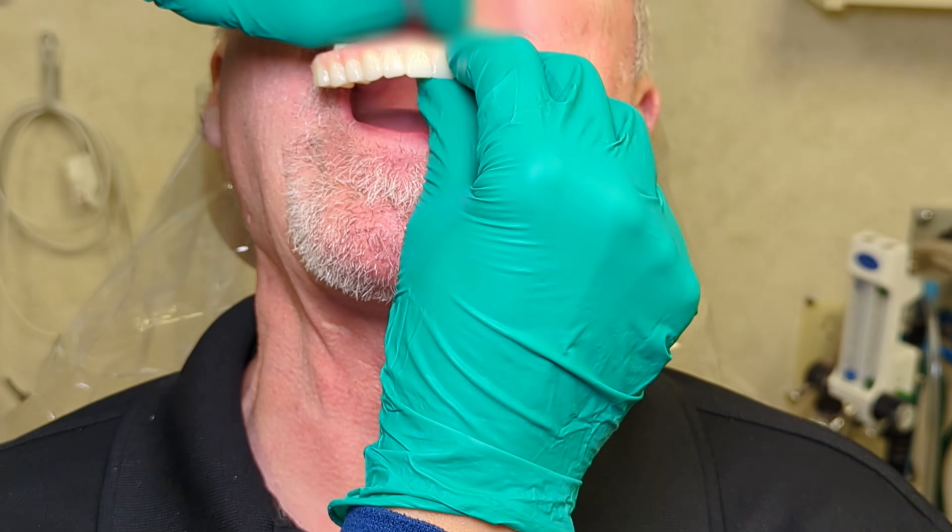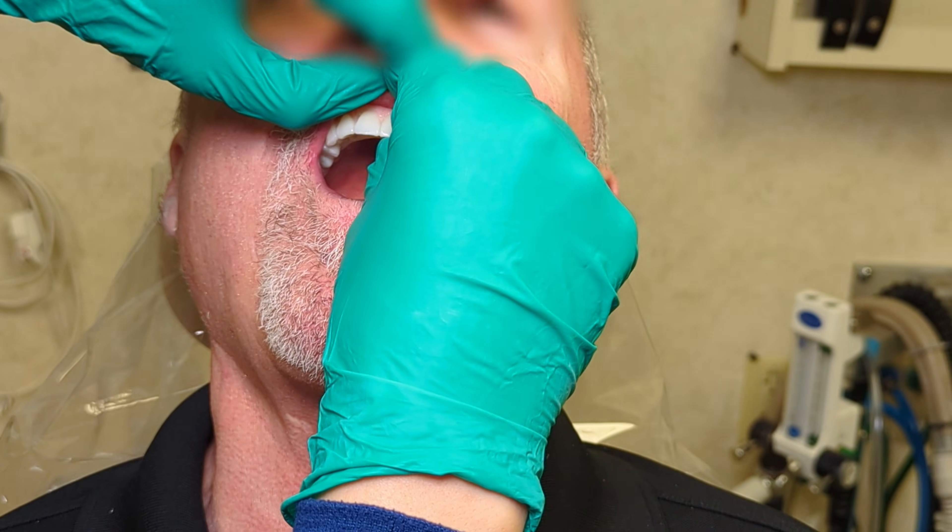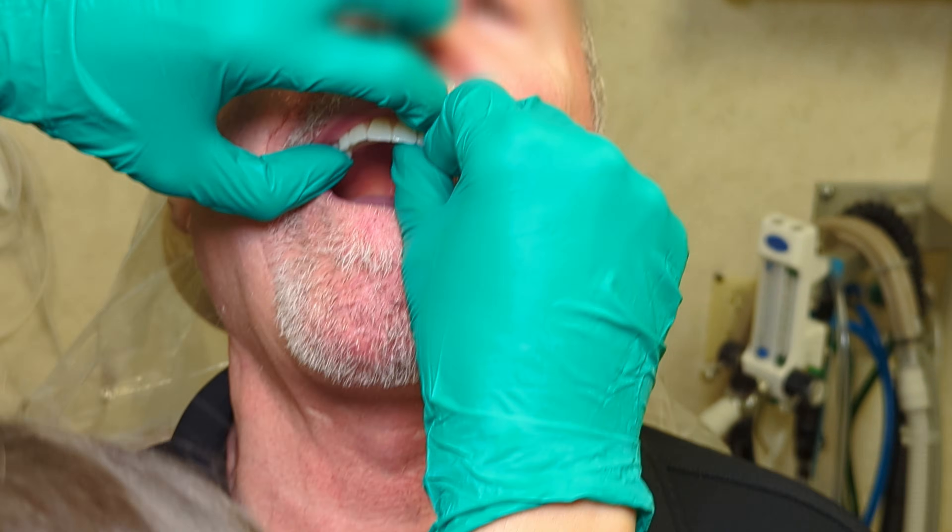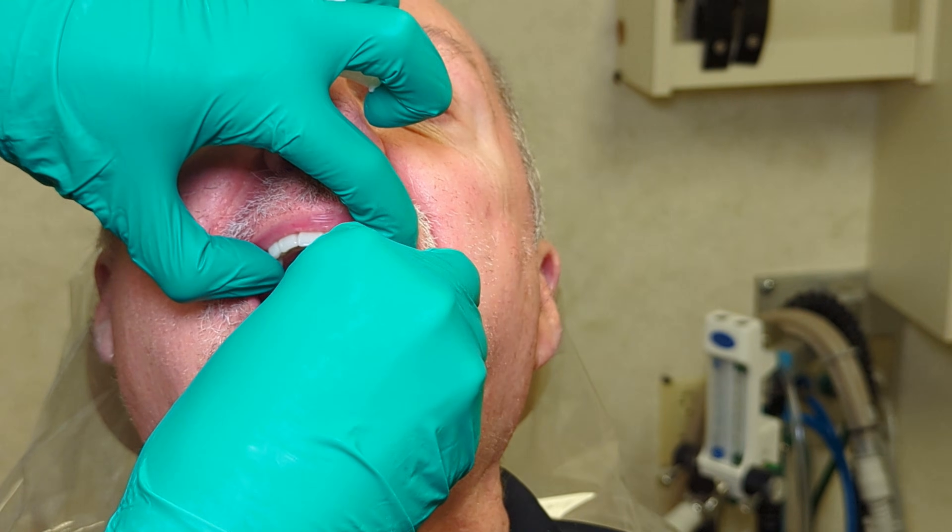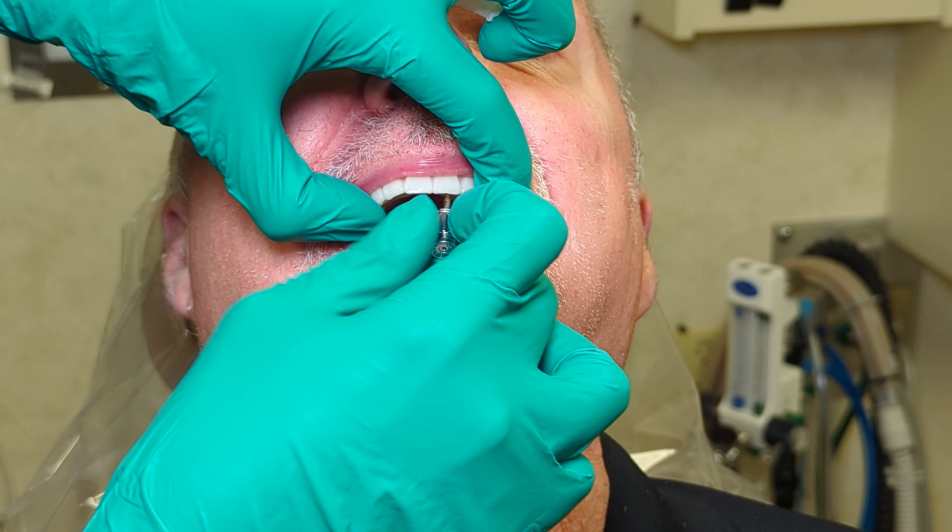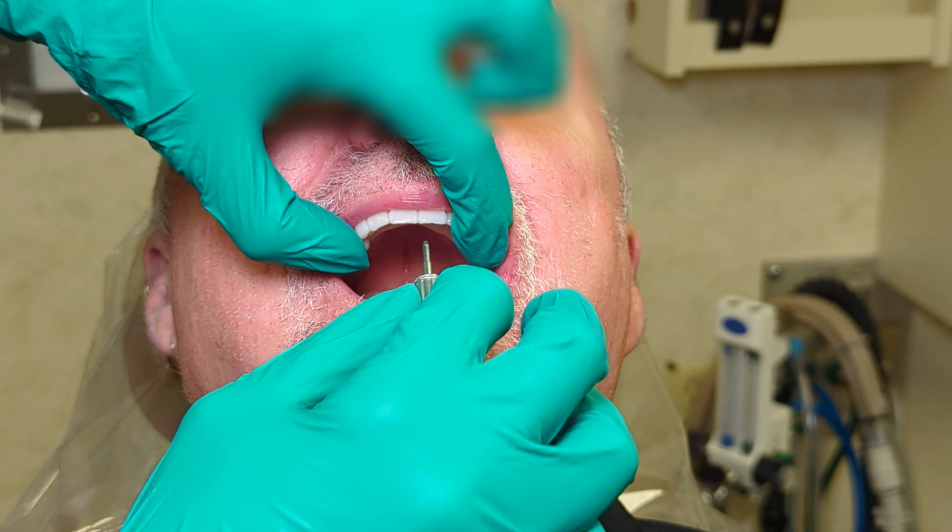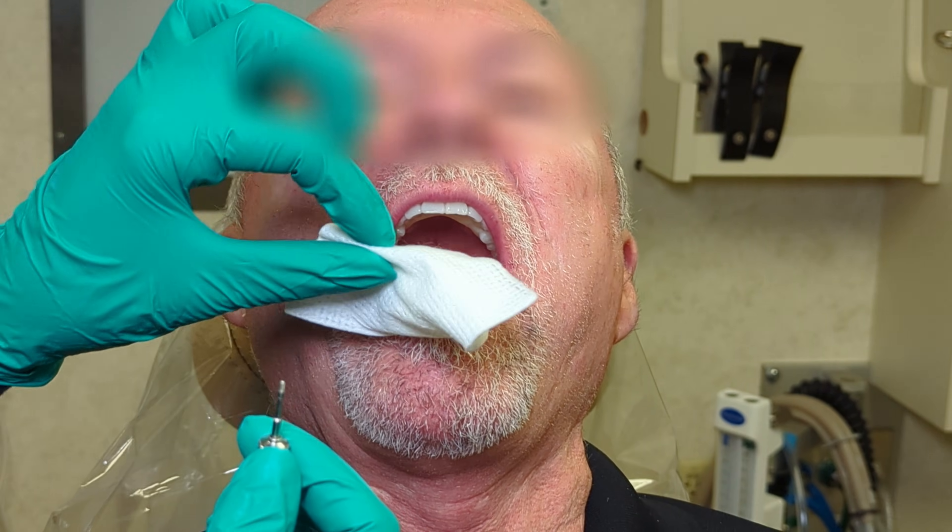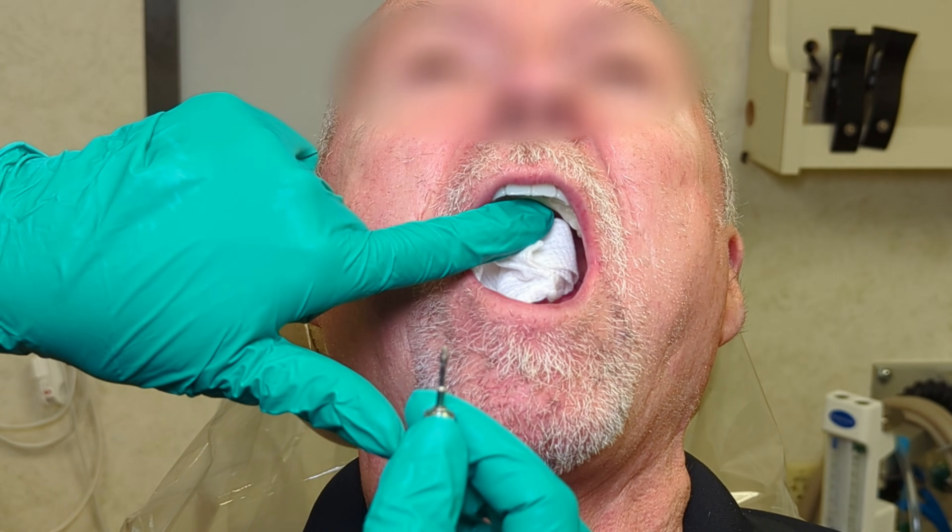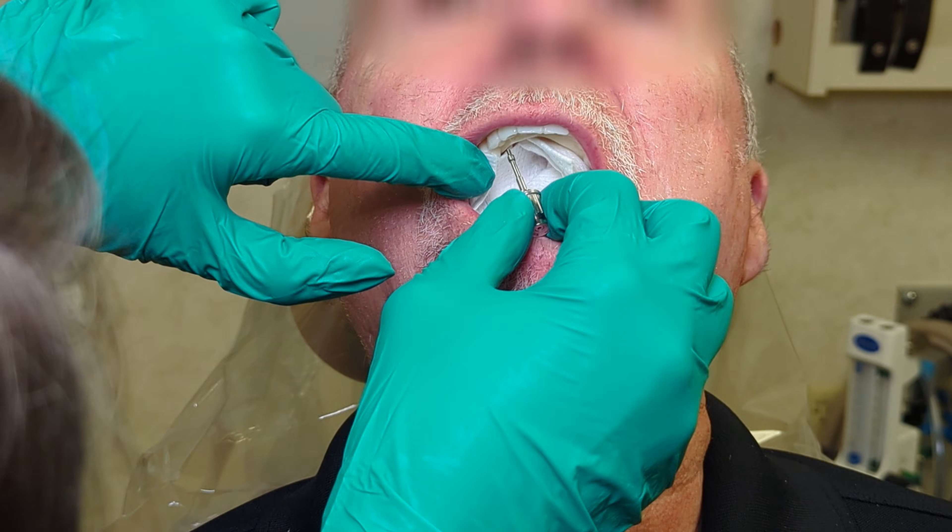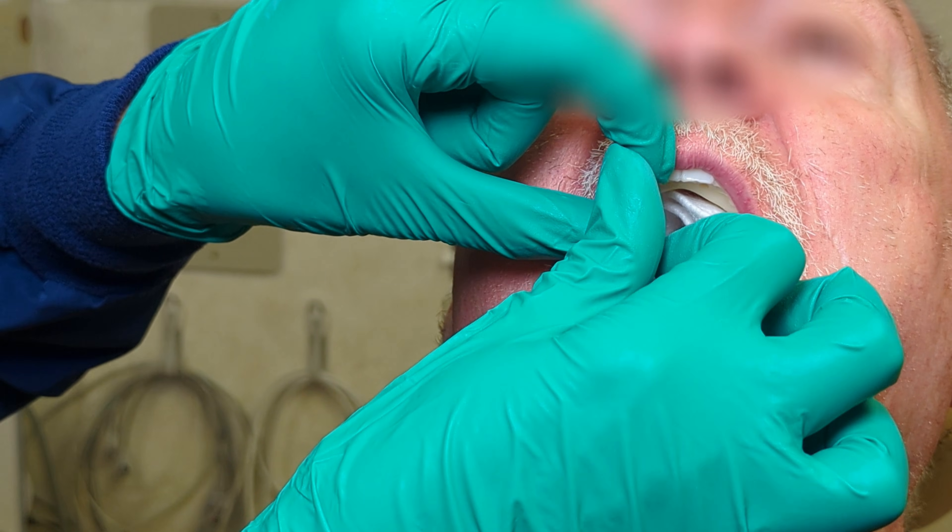After just 2 hours of total working time, including taking the PIC scans, designing the appliance in Exocad, printing them with a fast printer like the Asiga Ultra and applying the pink with EasyGum, you can deliver a high aesthetic all-on-X prosthesis, ensuring a happy patient. While I prefer milling the prosthesis in PMMA for adding strength and aesthetics, printing provides an excellent interim solution while working on a milled one for delayed load.